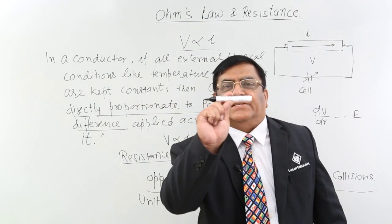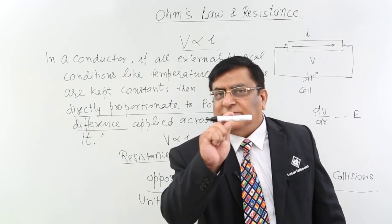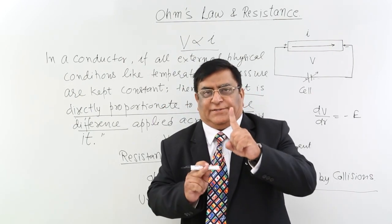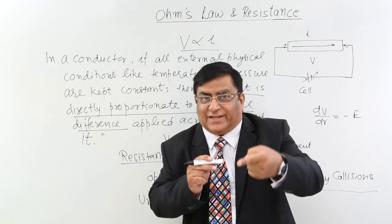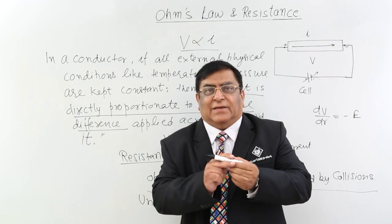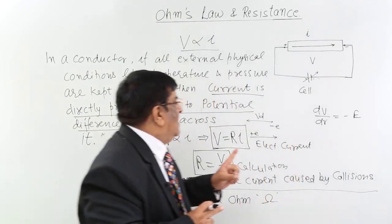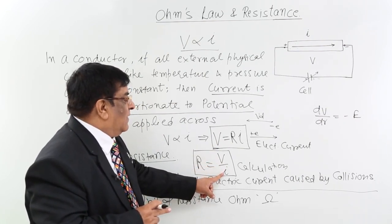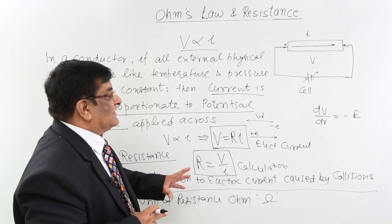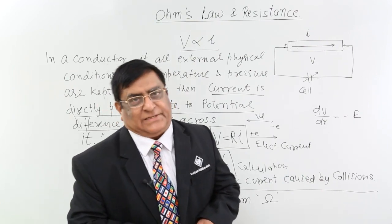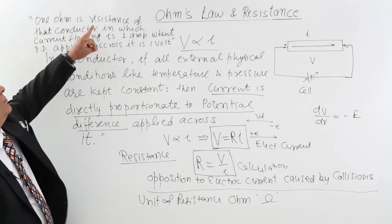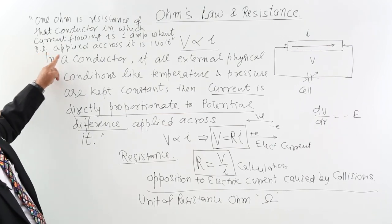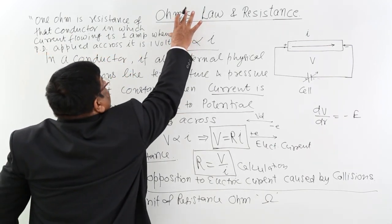Define 1 ohm resistance: if there is a conductor across which I apply 1 volt and the current flowing is 1 ampere — neither less nor more — then the resistance of this conductor is 1 ohm. Voltage is 1 volt, current flowing is 1 ampere, so resistance becomes 1 ohm. 1 ohm is the resistance of that conductor in which the current flowing is 1 ampere when the potential difference applied across it is 1 volt.